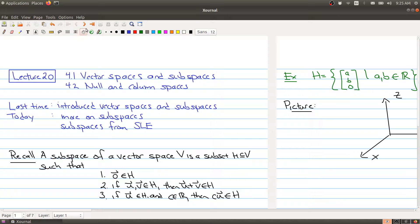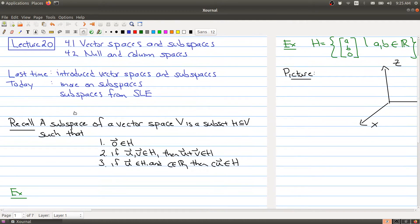So we talked about what a subspace is and I'm just recalling the definition here. A subspace of a vector space is a subset of the vectors, so it's a collection of vectors, so that it also satisfies three rules.